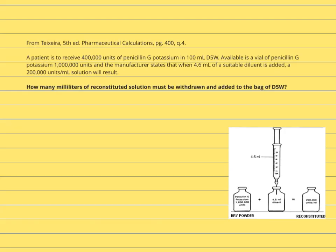So let's look at a practice problem. At first glance, it looks like there's a lot of information in this problem. A patient is to receive 400,000 units of penicillin G potassium in 100 mLs of D5W. Available is a vial of penicillin G potassium, 1 million units, and the manufacturer states that when 4.6 mLs of a suitable diluent is added, a 200,000 units per mL solution will result. This is what that looks like right here.